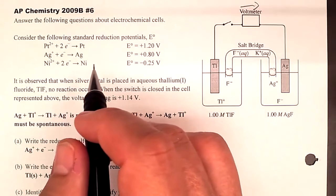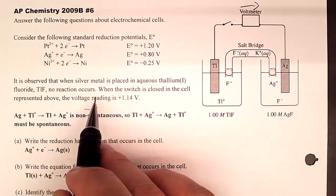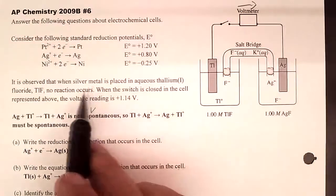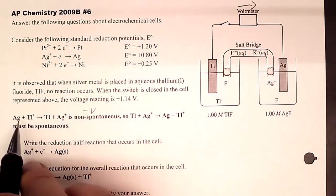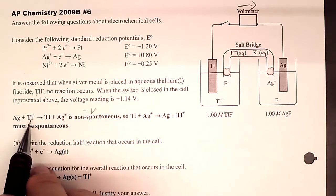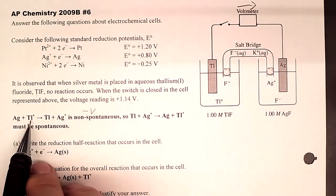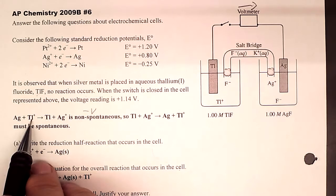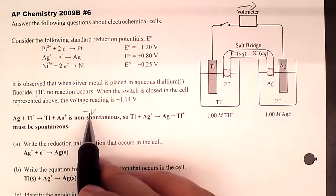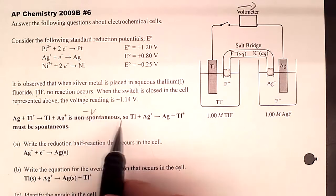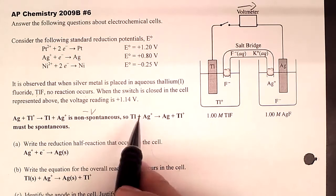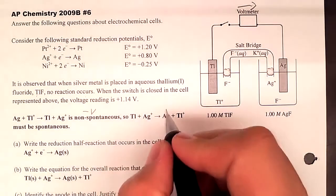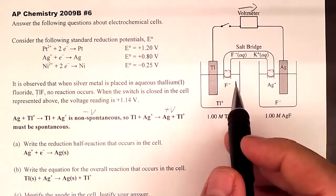This problem hides information in a paragraph that seems like it's not telling you much, but it's actually a big clue. If you put silver metal in aqueous thallium fluoride, no reaction occurs. This tells us that electrons don't flow from solid silver to thallium cation — that reaction has a negative voltage. Therefore, the opposite must be what nature wants: solid thallium in aqueous silver cation must be the spontaneous, positive-voltage reaction.